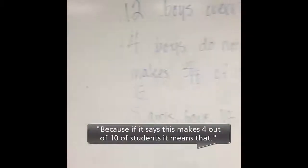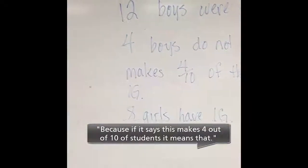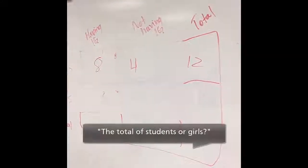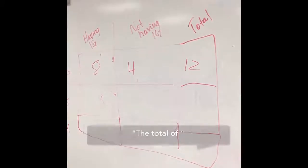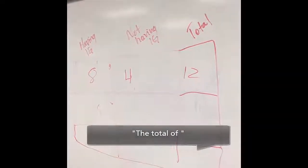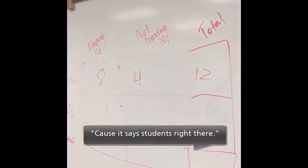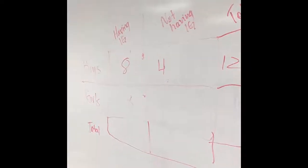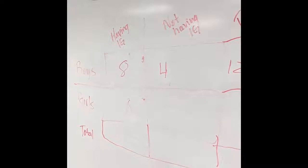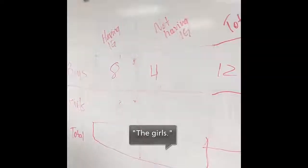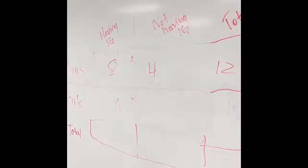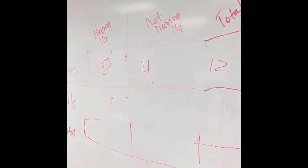How did you determine that the total would be 10? Because if it says this makes 4 out of 10 of students, that means that. Okay. The total of students or girls? The total of... Because it says students right there. I know. When it says students, who was included in that category of students? The girls. Just the girls? The girls and the boys. The boys. So Anthony said the 10 would be the total. Where would that go in our two-way table?